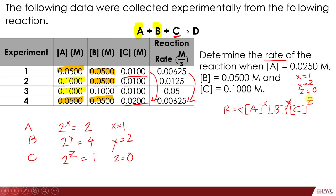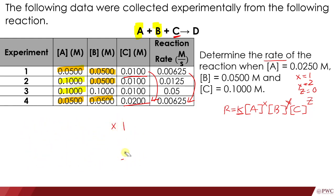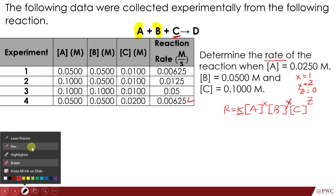We have now determined the orders of reaction: x equals 1, y equals 2, and z equals 0. The next step is finding the rate constant k. We will use the rate law and plug in data from any of the experiments. Let's use experiment 1 to make it easy.